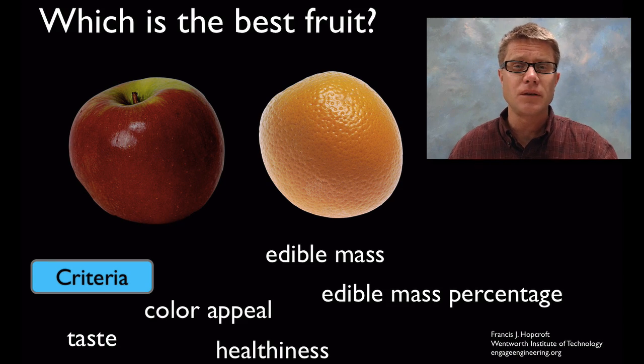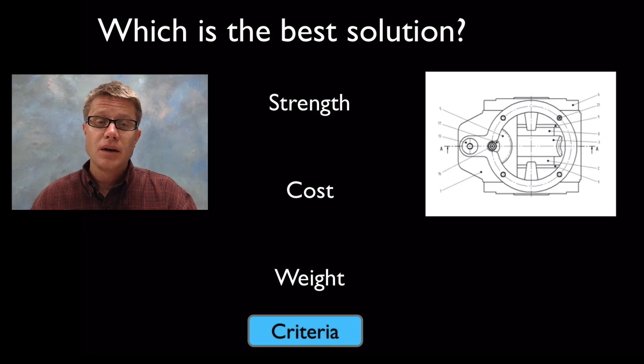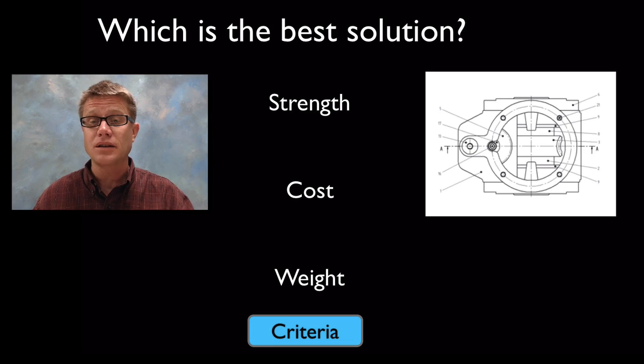Now that's kind of a silly example, so let me give you some real examples. Let's say I'm designing a part that goes in an engine. What is the best solution to this problem? We could look at a number of different criteria: the strength of it, the cost, and maybe the weight.